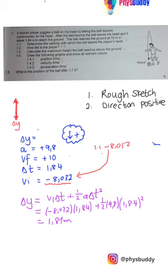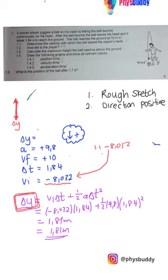So the boy's height is 1.81 meters. His height corresponds to the displacement of the ball — just like in previous questions where we find the height of a building. The equation accounts for the displacement, cancelling out the distance the ball travels above his head and back, giving a straight-line displacement from start to end.